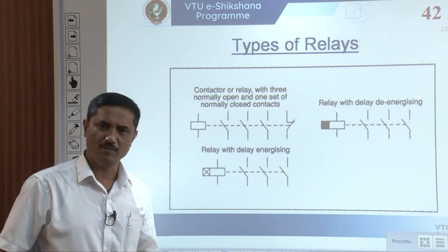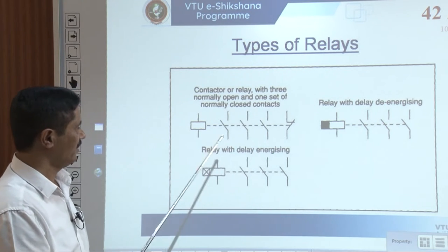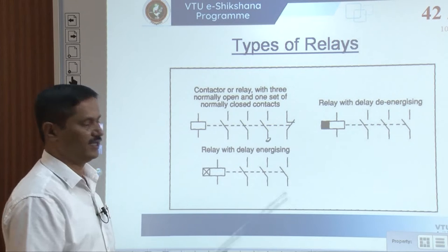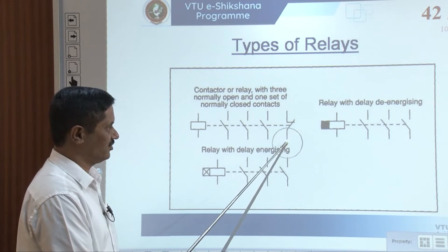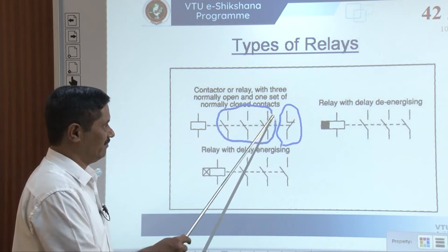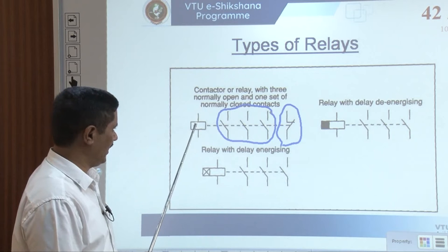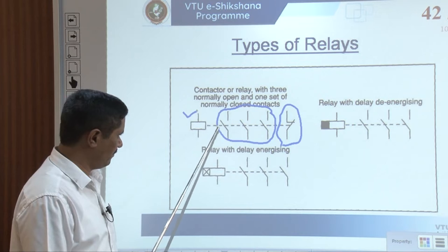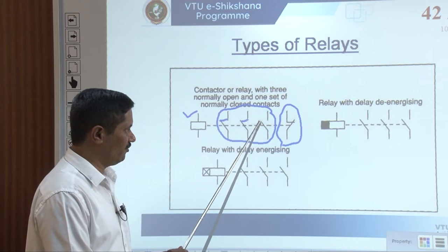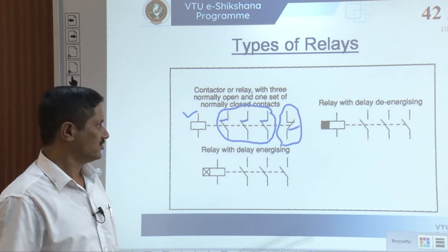Types of relays include a contactor with three normally open and one normally closed contact. When the relay coil gets energized, the electromagnetic force pulls the rod, so all NO contacts become NC and the previously NC contact becomes NO — meaning all three NO get closed and the NC opens. This allows you to enable three outputs to get on and break one output when the relay is energized.